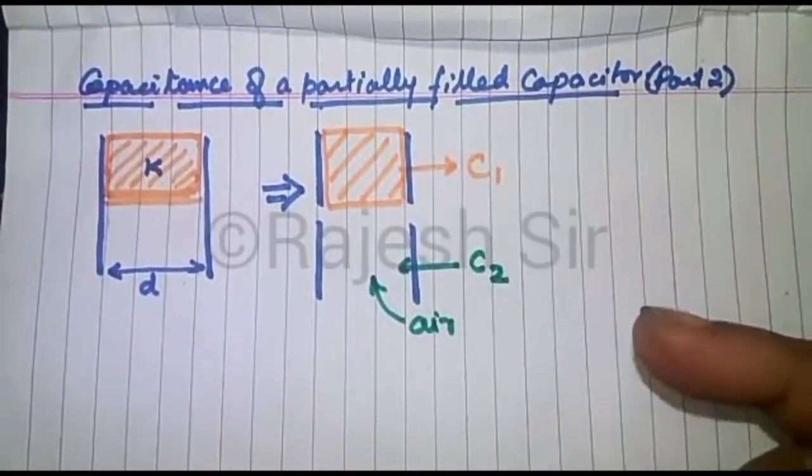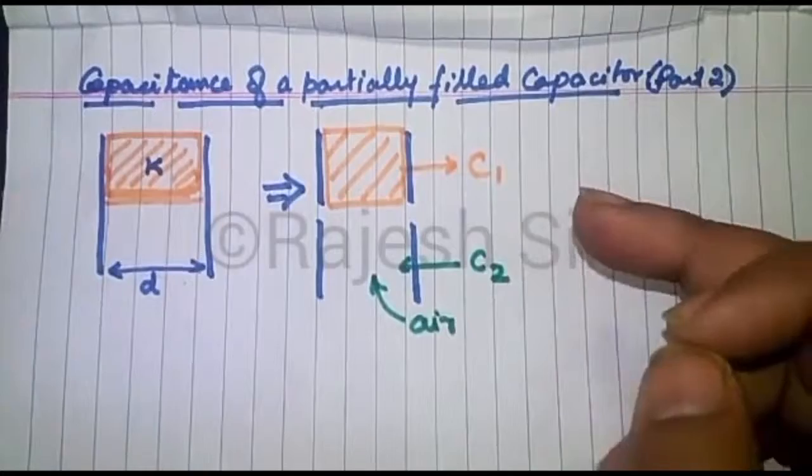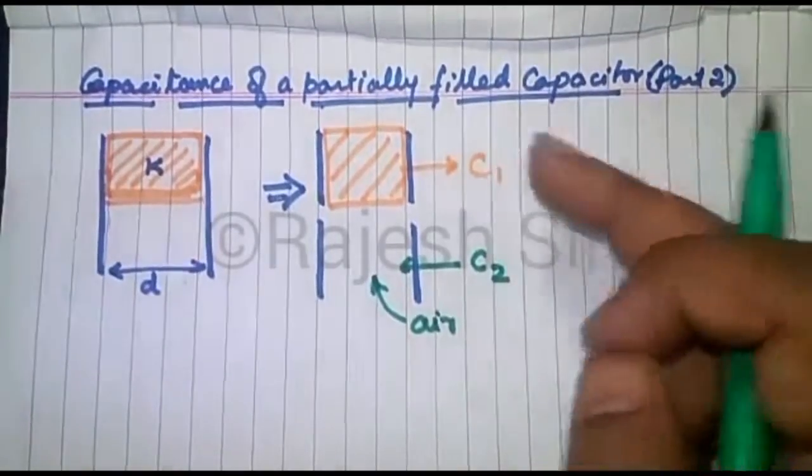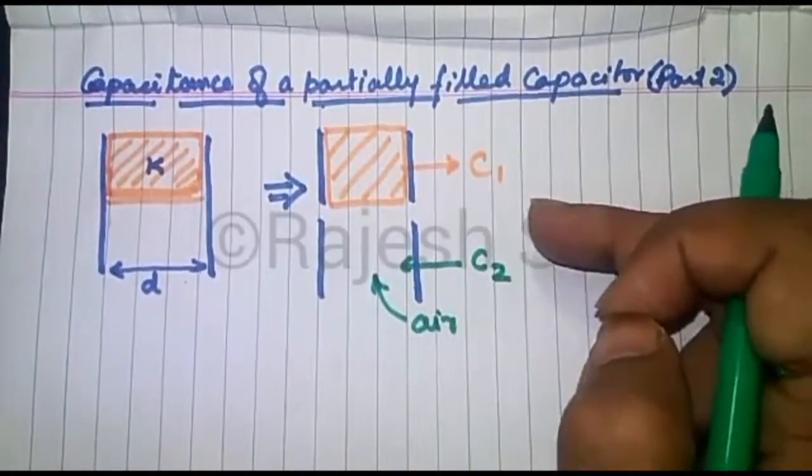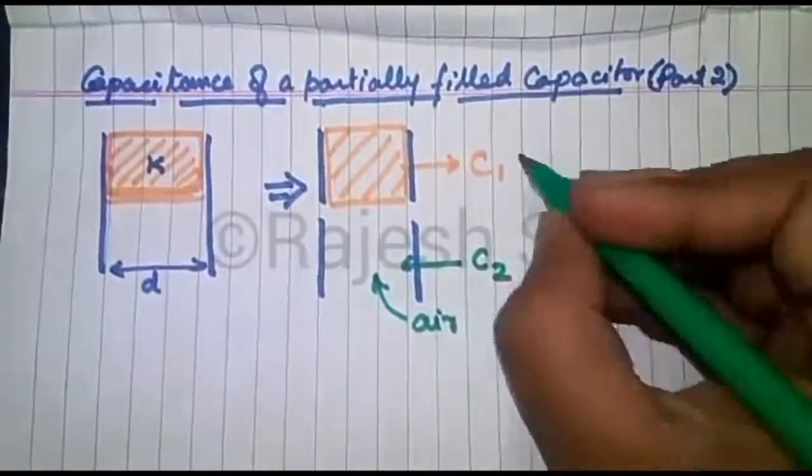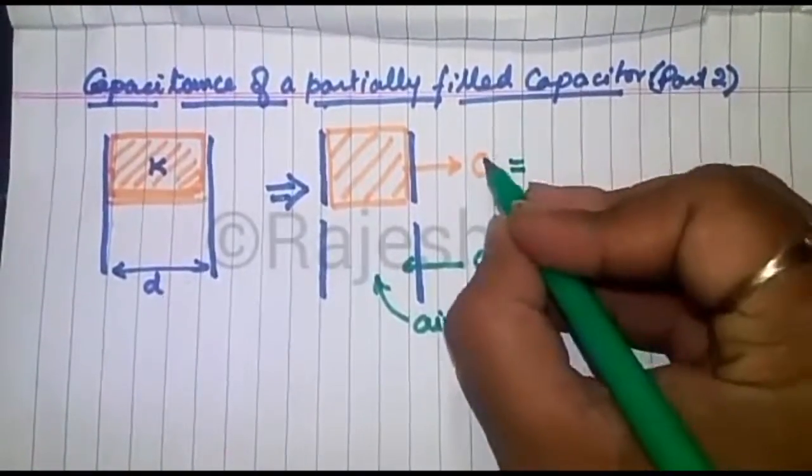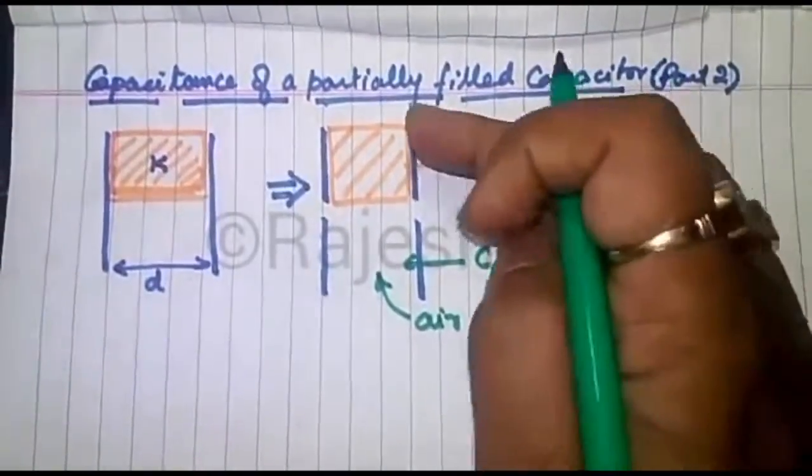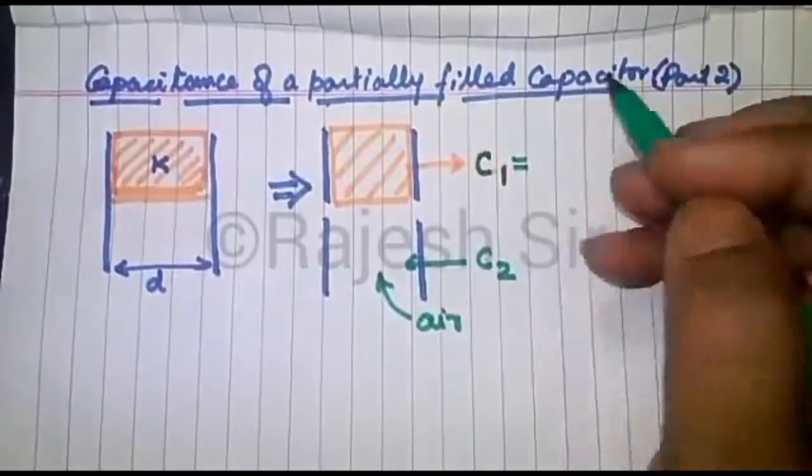So here we are having two capacitors, one which is completely filled with the dielectric, another which is filled with air. Here the only difference is this time the area of the plates has been halved.